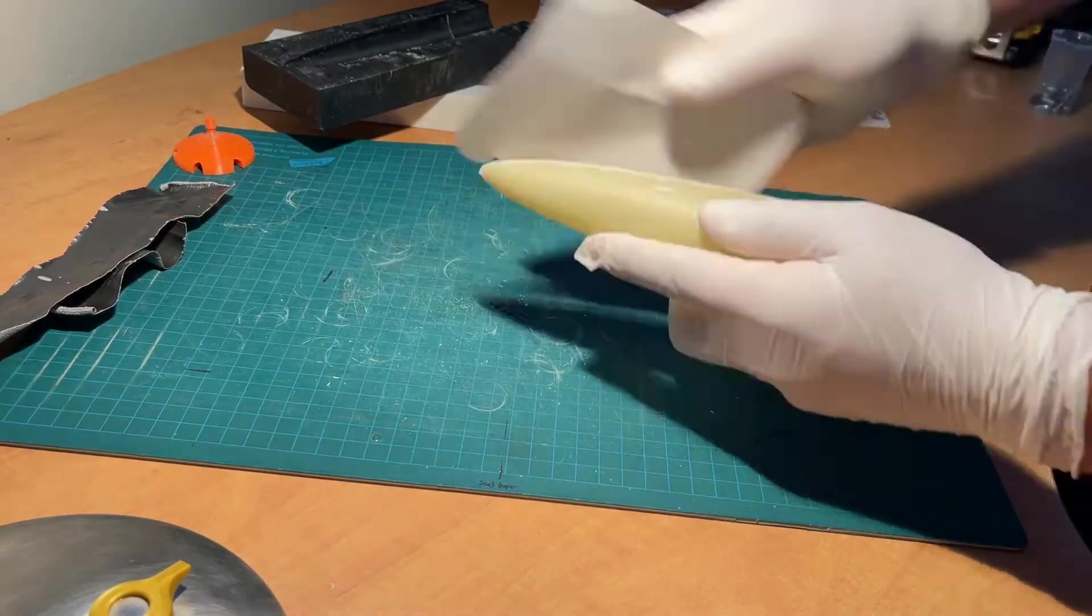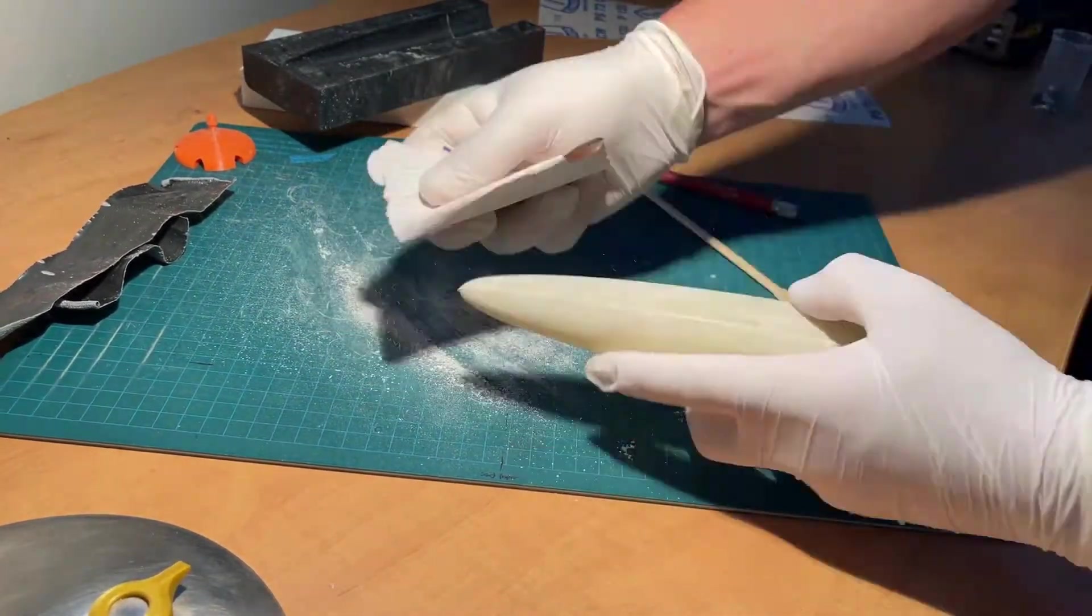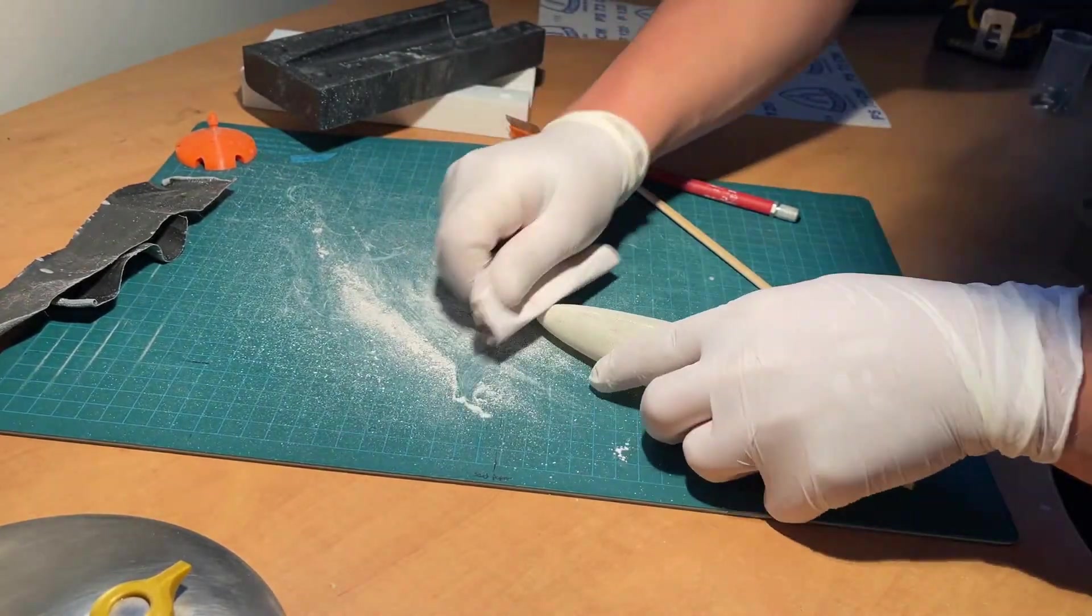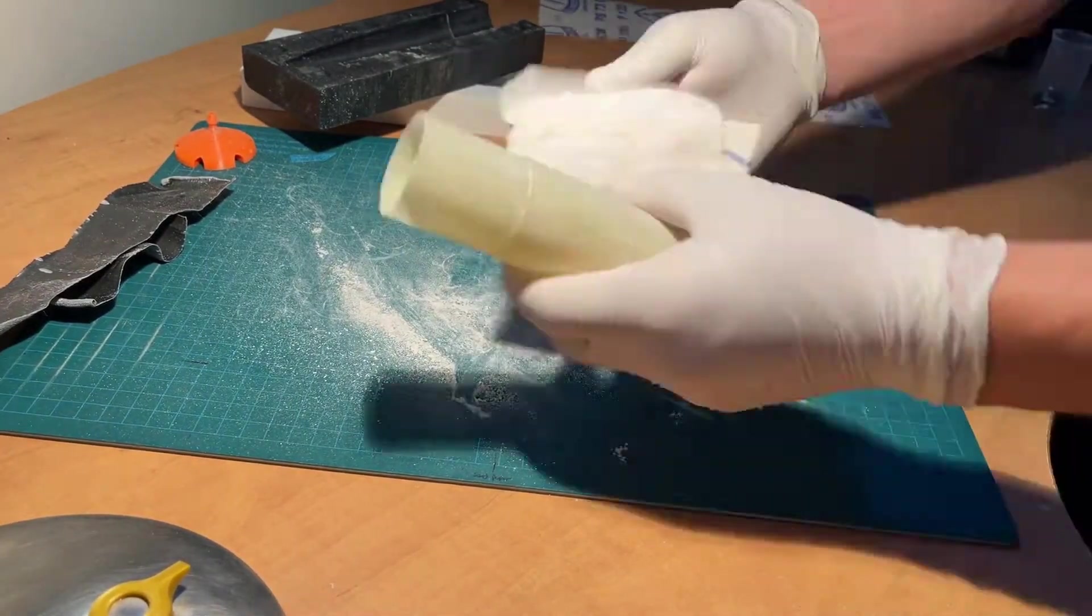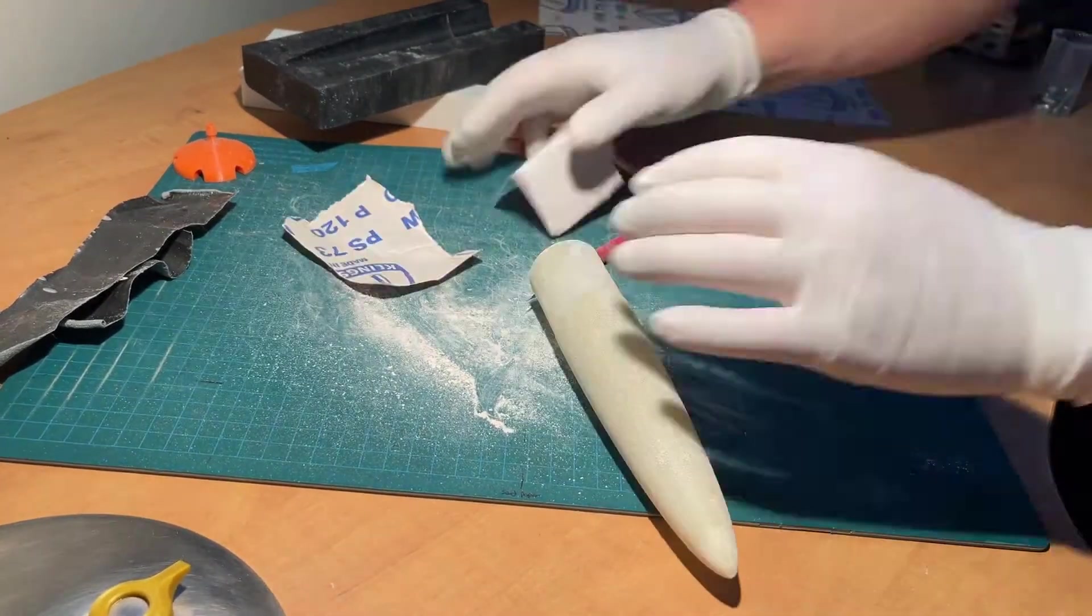Being careful with the sharp epoxy and glass fiber flash, the edges can be removed with a knife and sandpaper. Remembering to wear a filtered face mask or respirator to protect yourself from the dust, 120 grit sandpaper is used to flatten the edges and smooth out the excess bits all over the cone.